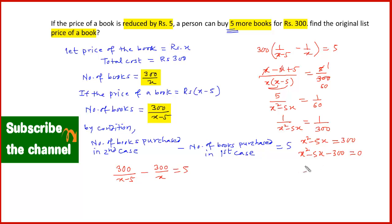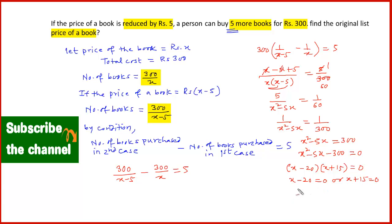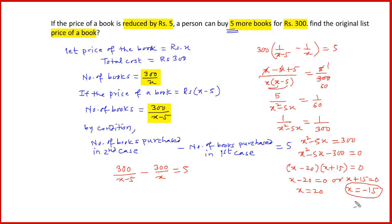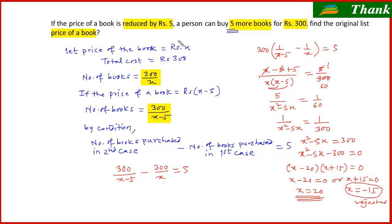Solving by splitting the middle term gives (x − 20)(x + 15) = 0. The product of these two brackets is zero, so x − 20 = 0 or x + 15 = 0, giving x = 20 or x = −15. Since x is the price of the book, it cannot be negative, so x = −15 is rejected. Therefore, x = 20, meaning the original list price of the book is Rs. 20.